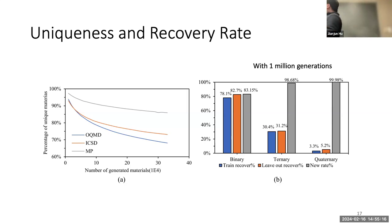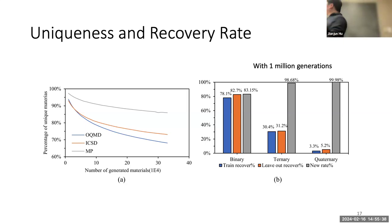For ternary compounds, our recovery rate is much lower because with three elements you have many more combinations. With a limited number of training samples, the recovery is much smaller. For quaternary compounds - four elements - you have an even bigger combination space. Our recovery rate with one million training samples recovers a much lower percentage of quaternary materials.